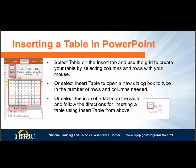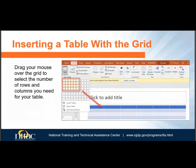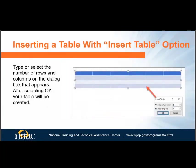To insert a table in PowerPoint, go to the Insert tab, select Table, and either use the grid to create your table or use the Insert Table option and type or choose the number of rows and columns needed. You can also insert a table directly from the slide by selecting the table icon in the middle of the layout placeholder. To insert using the grid, drag your mouse over the grid to select the number of rows and columns and release. For the Insert Table method, a dialog box appears where you can type or use selector arrows to choose rows and columns, then press OK.